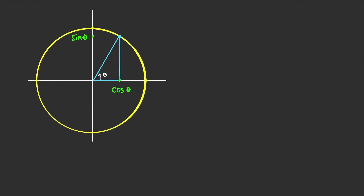If we look at this figure, this is a unit circle — a circle of radius one. So this side is one and that side is one. We have here a right triangle, and if this angle here is a positive angle with measure theta,